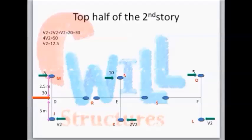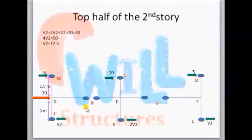Now let's take the bottom story of the building. For the bottom story, I have considered the second half of the first story and the first half of the bottom story. The main joints of the bottom story are D, E, and F. The red-colored points are hinges. We cut the bottom story at hinges J, K, and L to determine the shear in those columns.